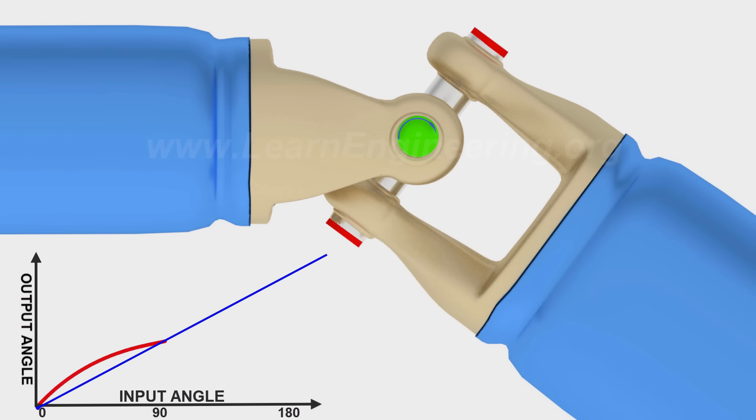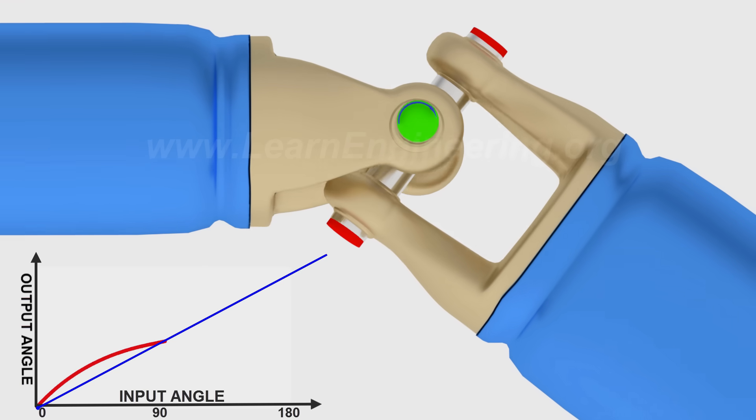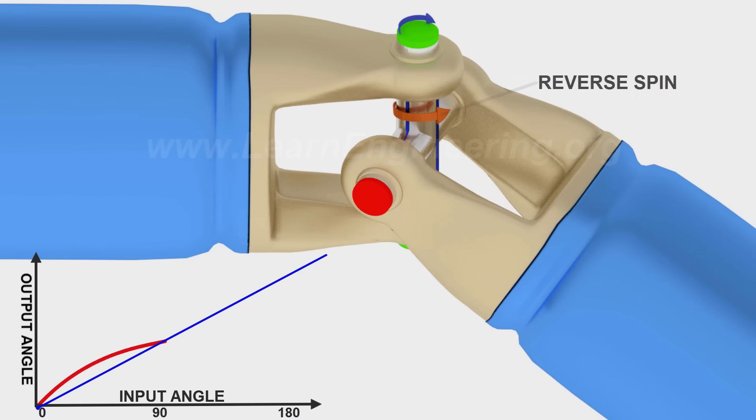But for the next 90 degrees, it should spin back to the initial zero position. The reverse spin will have an opposite effect on the output shaft rotation.